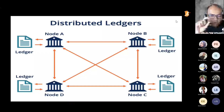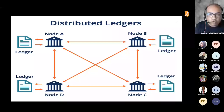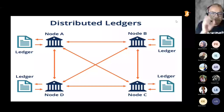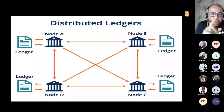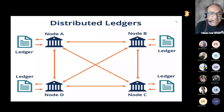Even if node B moves out or node C takes an exit, node A and D are still there. Even if three out of four nodes move out, as long as node A is there, blockchain will keep working. And if node B tries to manipulate the ledger, nodes A, D, and C will reject it — an alert will be sent to the network. Nobody can manipulate the network because everybody has the same copy of the ledger. That is the power of the distributed ledger.